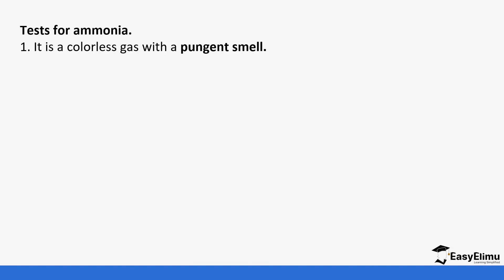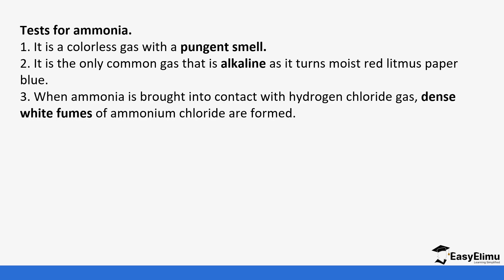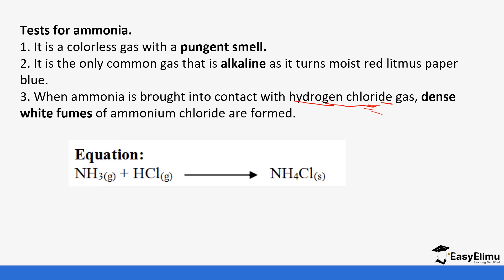To test for ammonia: first, it is a colorless gas with a pungent smell. Second, it is alkaline in nature and turns moist red litmus paper to blue — this is unique because it is one of the few gases that is basic. Third, when ammonia is brought into contact with hydrogen chloride gas, dense white fumes of ammonium chloride are formed. The equation is: ammonia reacts with hydrochloric acid to form ammonium chloride, a white solid.